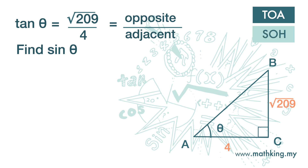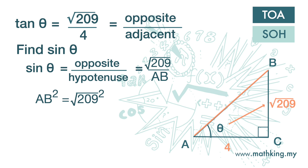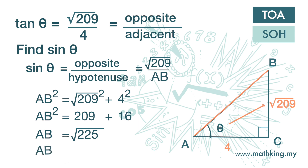We want to find sine theta. Sine is opposite over hypotenuse. We can see from the diagram that opposite is square root 209, while hypotenuse is AB. We do not know AB, but we can find AB using Pythagoras theorem. AB squared is square root 209 squared plus 4 squared, so AB squared is 209 plus 16, and AB is square root 225, which is 15. We substitute that value into the equation, and we get sine theta is square root 209 over 15.